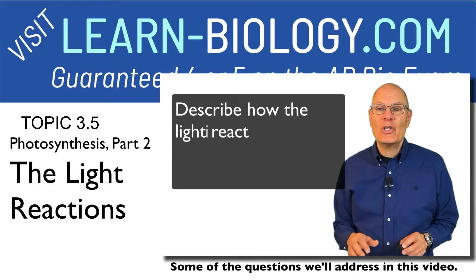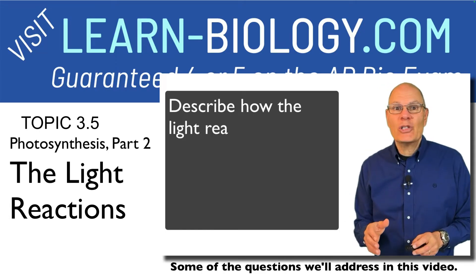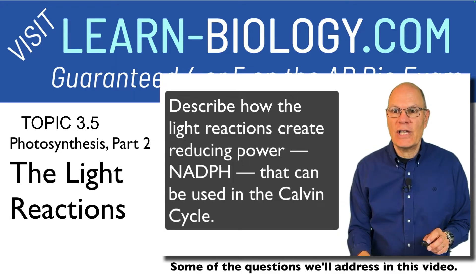Describe how the light reactions of photosynthesis create ATP. Describe how the light reactions create reducing power, NADPH, that can be used in the Calvin cycle.